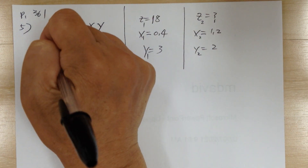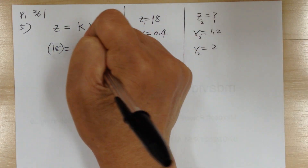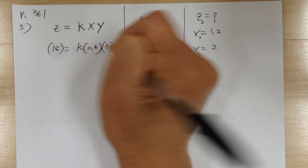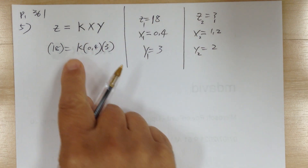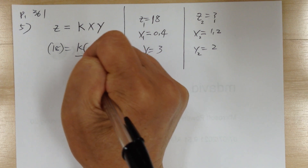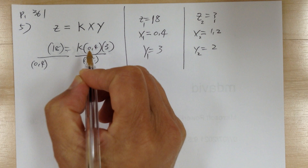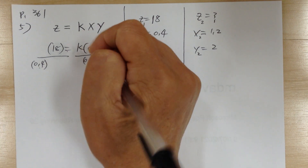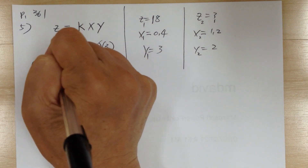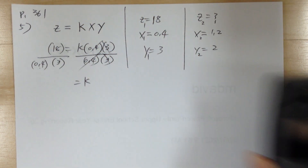Substitute everything to look for k. X is 0.4 and y equals 3. To solve for k, I need to get rid of those two. Divide by 0.4 on both sides — this will cancel out. Then divide by 3 on both sides — this will cancel out. So k equals...